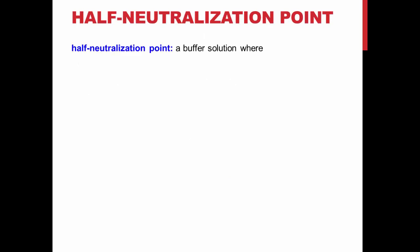Last week, you found the half-neutralization point in the buffer region of your titration curve. This is the point where the concentration of acetic acid is equal to the concentration of its conjugate base.